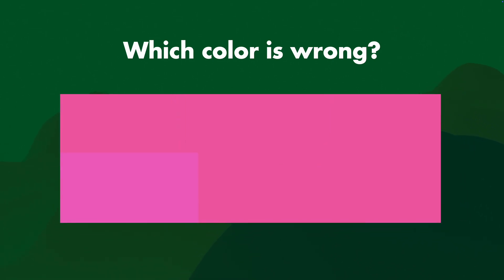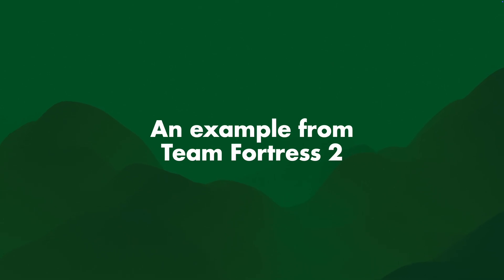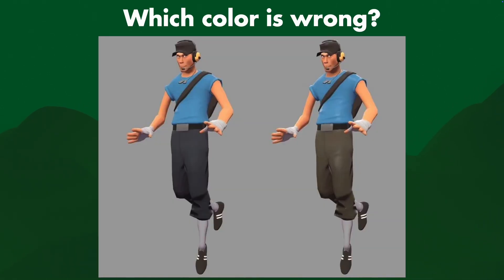So as you can see, if anyone's allowed to just pick colors, it's very easy to accidentally pick a slightly off color. Let me give you an example from Team Fortress 2, that recently was in the news. Out of these two Scouts, their pants — which color is wrong?